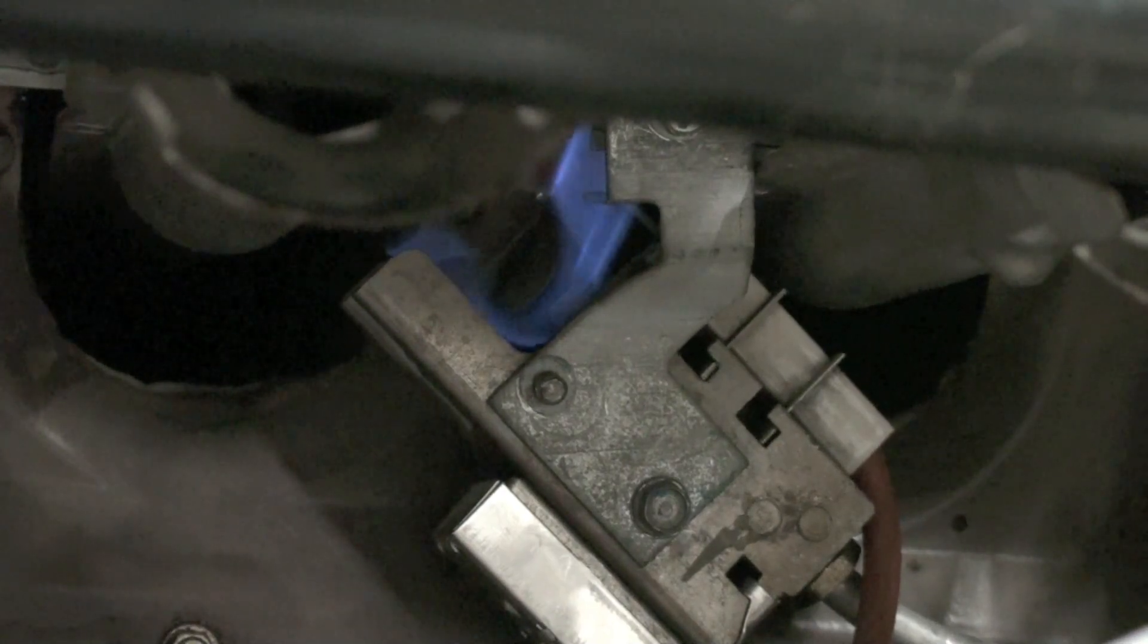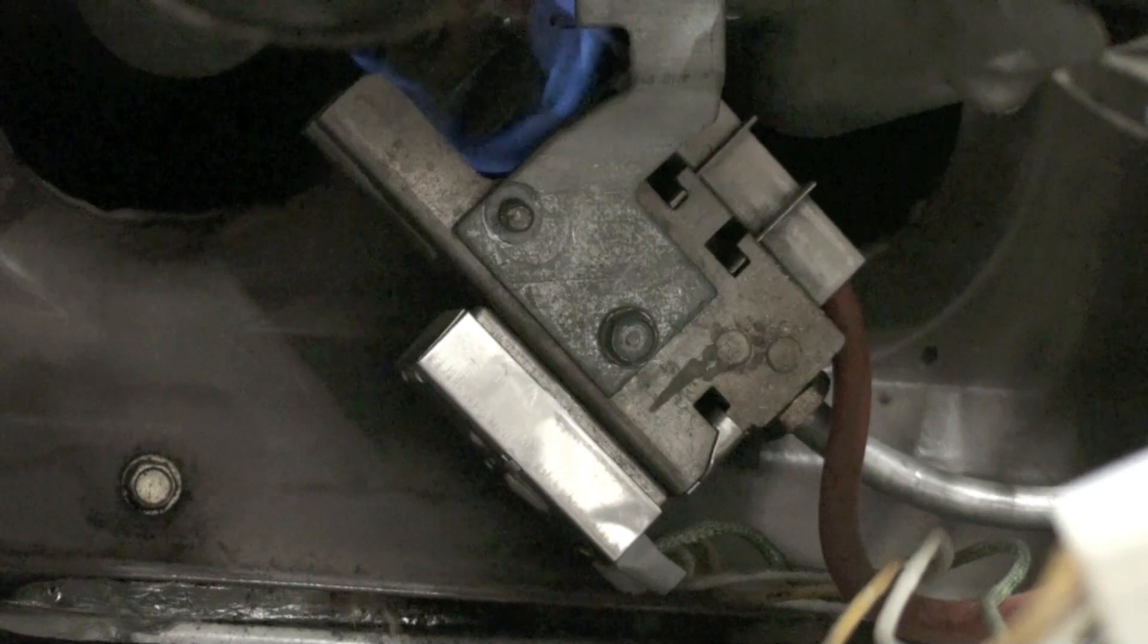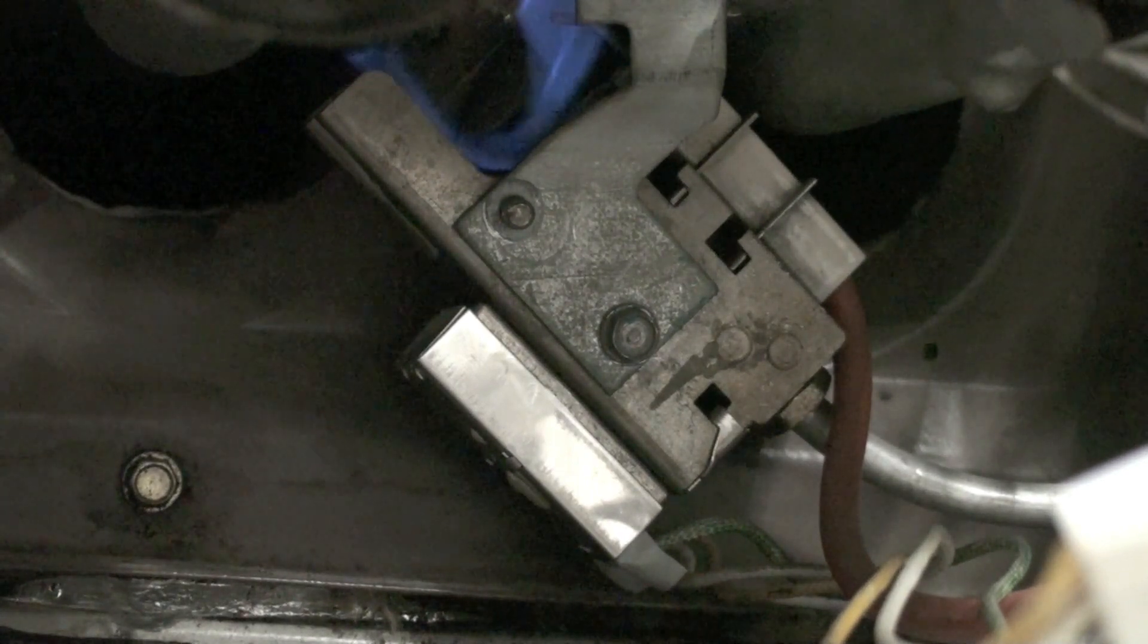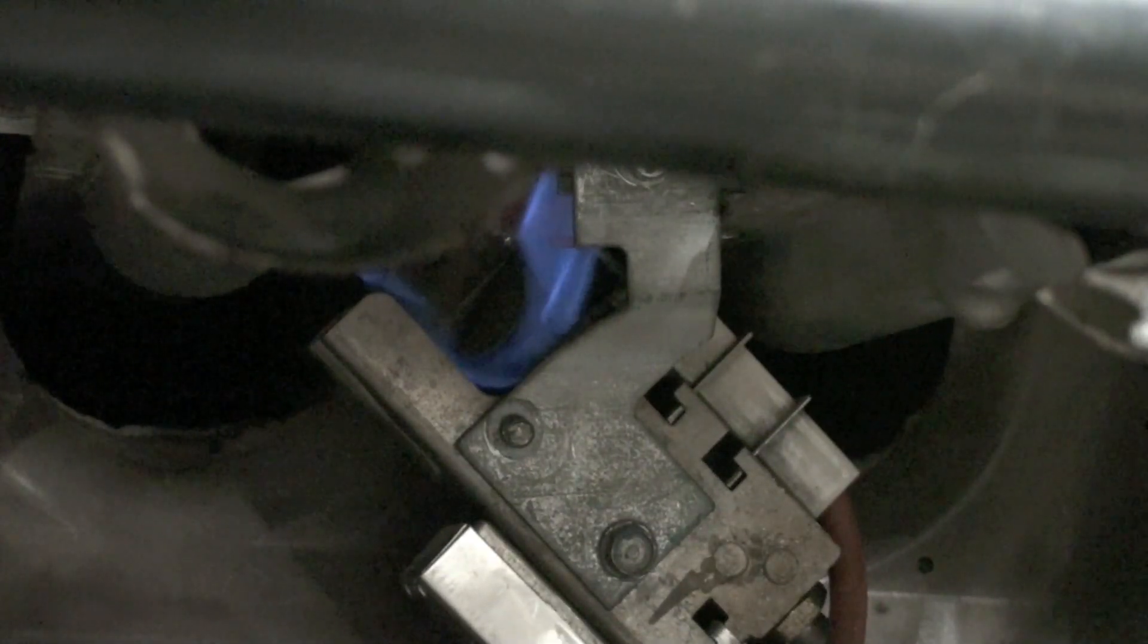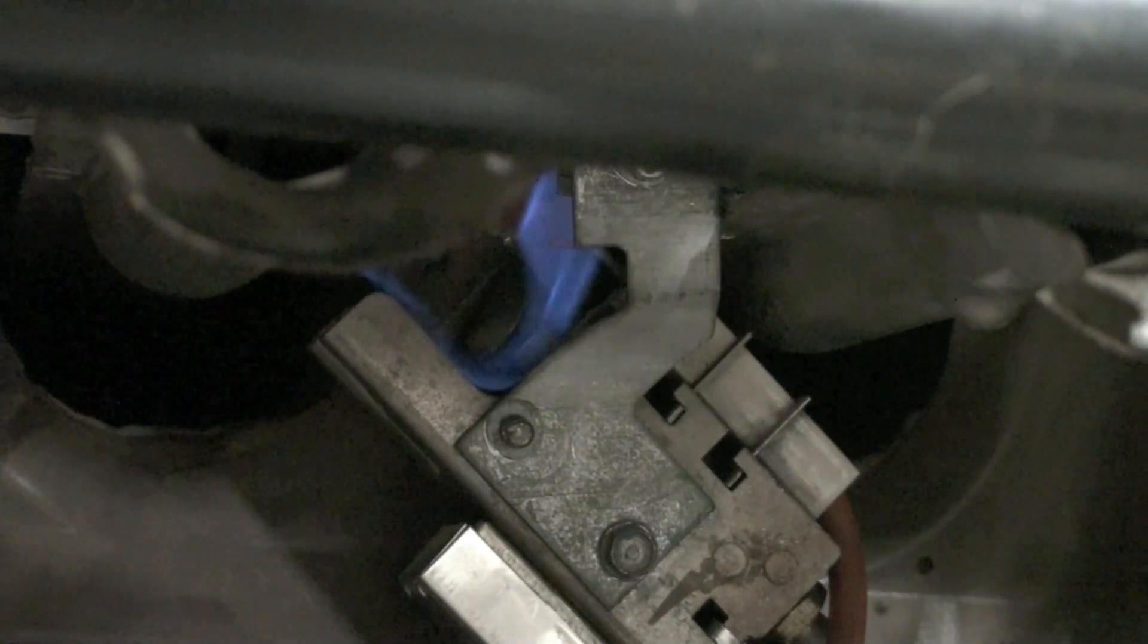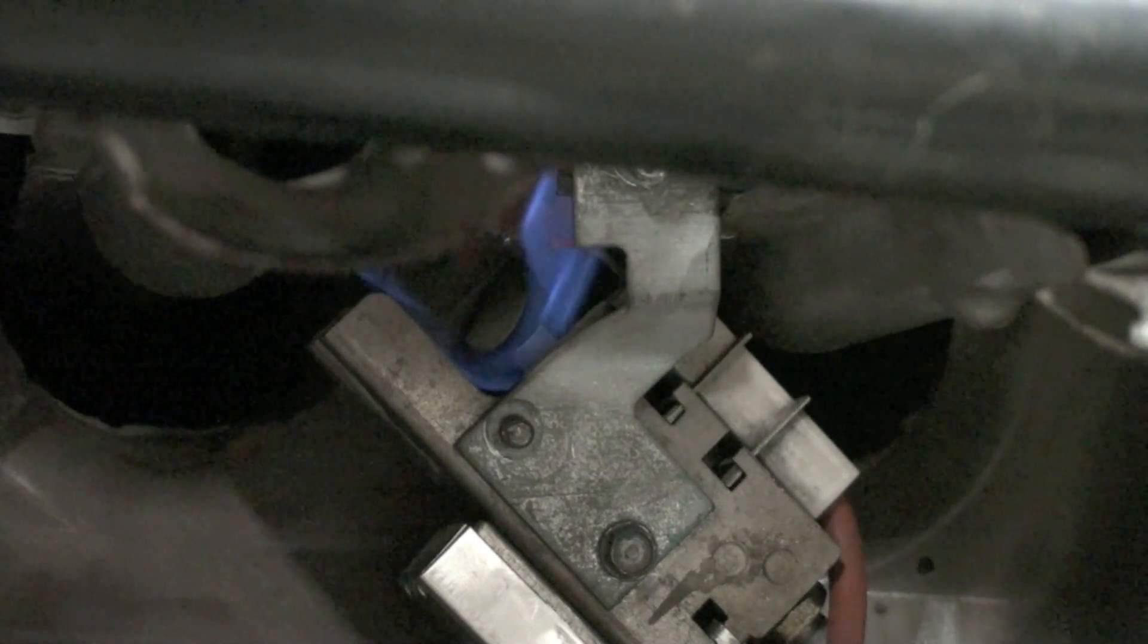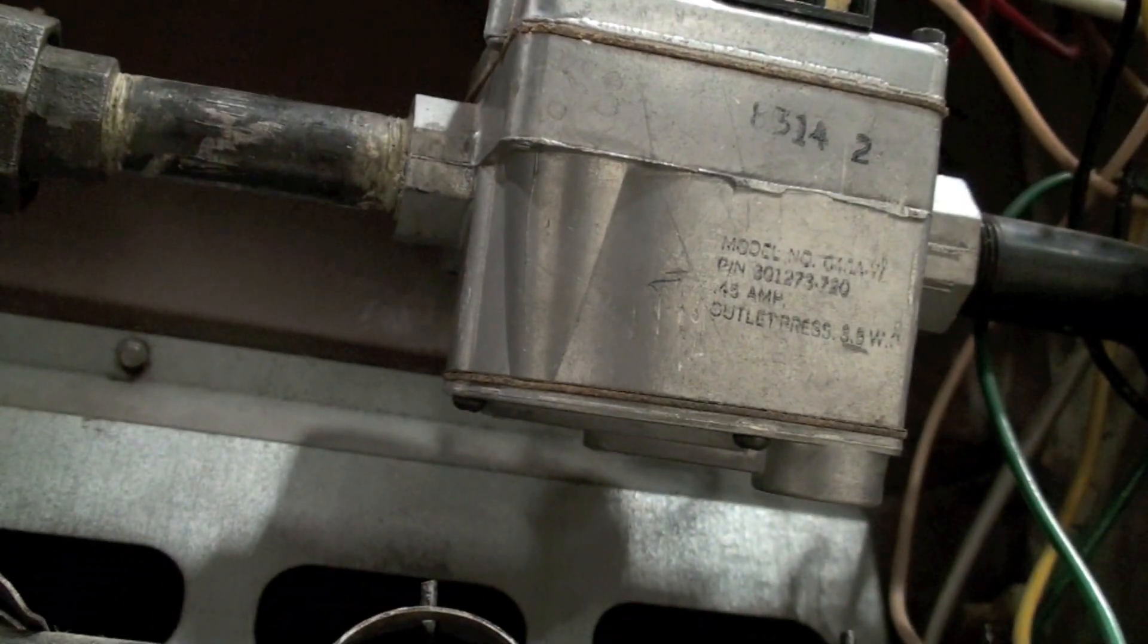You can see the high-tension cable down there and also the quarter-inch aluminum tube for gas. The high-tension cable does a spark, and the gas comes through the pilot. It's all coming from up here to that gas valve.